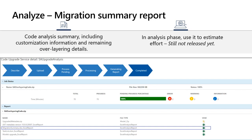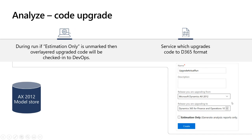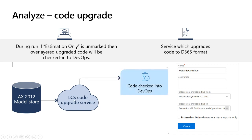The upgrade tool with estimation only selected provides just analysis reports. When the estimation only option is unmarked and you run the actual code upgrade, the service also upgrades your code to Dynamics 365 format and checks it into DevOps. Both the AX 2012 source code and the upgraded Dynamics 365 code will be checked into DevOps so you can pick it up and continue the conversion — and it will also generate the reports.